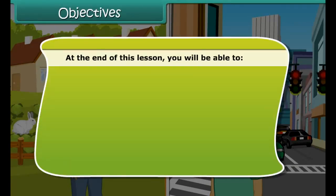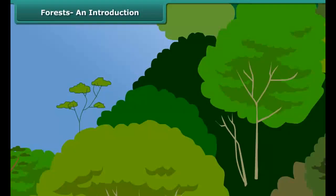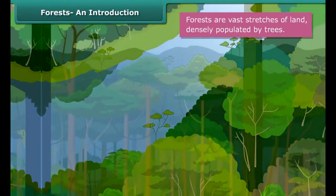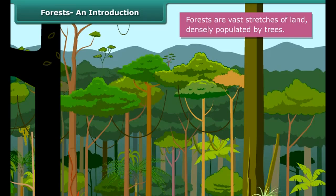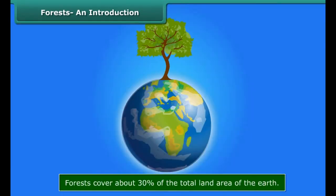Objectives: at the end of this lesson you'll be able to define forests, describe the structure of a forest, list the products obtained from forests, define food chain, list the constituents of a food chain, describe the importance of forests to human beings. Forests are vast stretches of land densely populated by trees, also known as woods. Forests cover about 30% of the total land area of the earth.